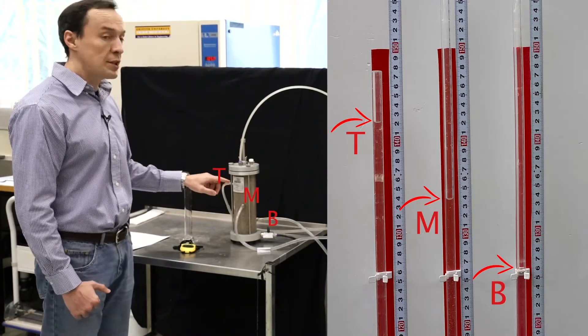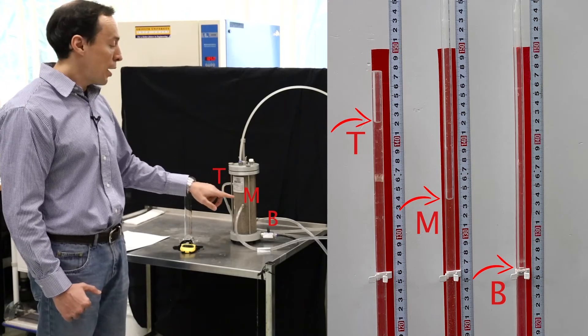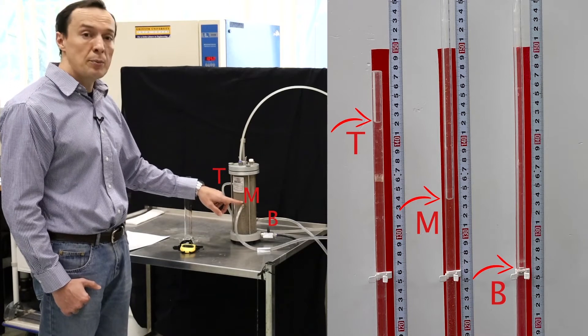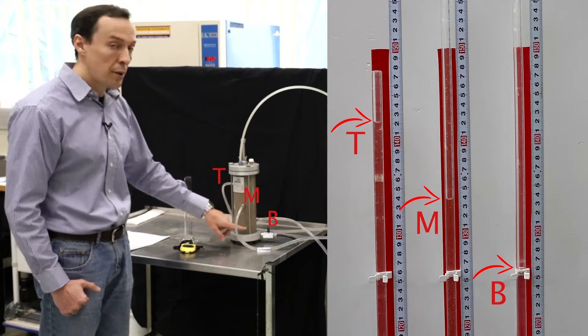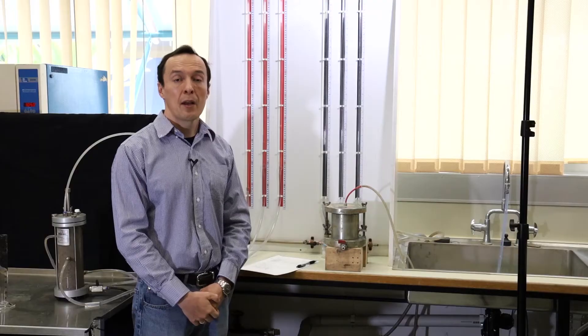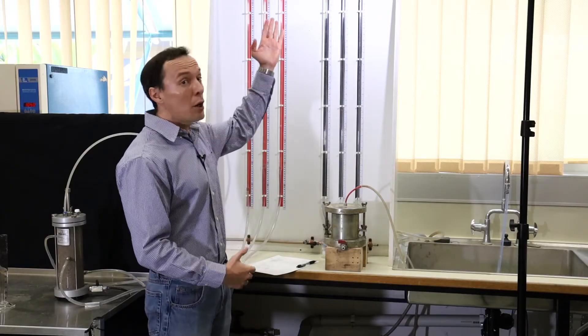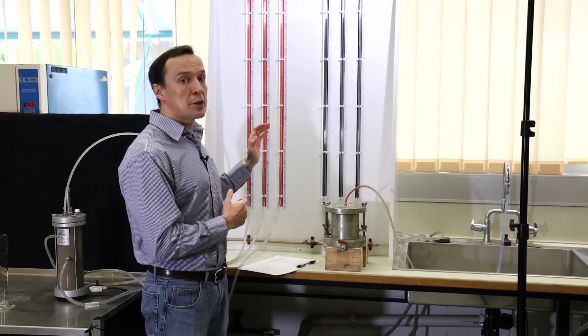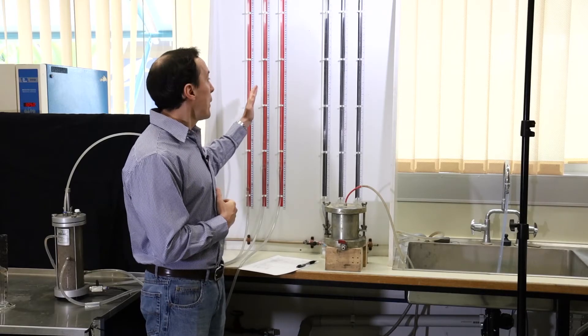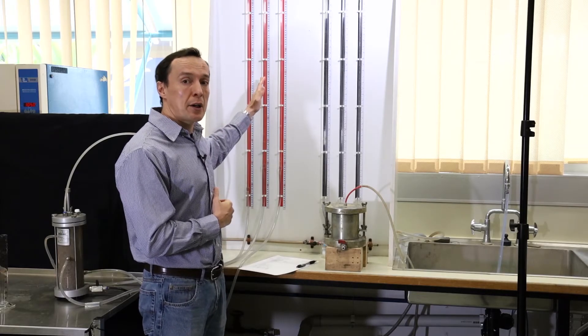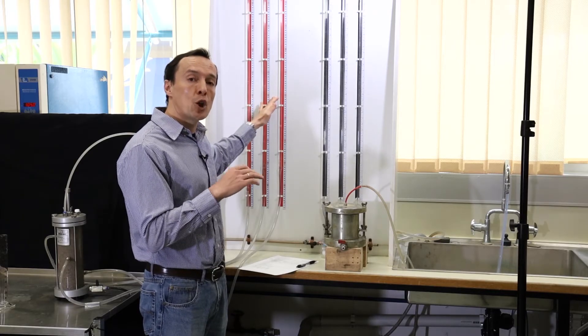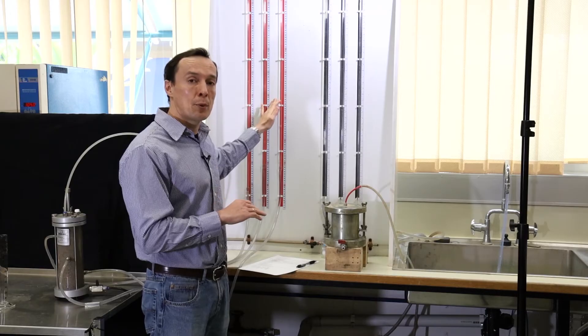The difference, the distance between the top and the middle manometer is 7.5 centimeters, the same distance from the middle to the bottom. For this test we use a water tank on the top to keep the water level constant through the whole test. We also use three sets of manometers. These stand pipes are attached to the wall and they are connected to the sample at three different levels: the top of the sample, middle and the bottom of the sample.